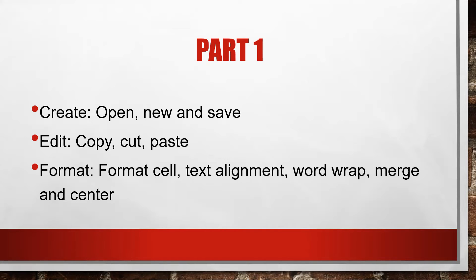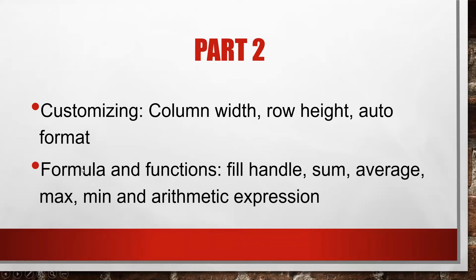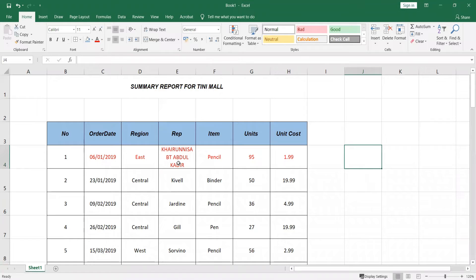Part one is done. I've taught you how to open a new workbook, how to copy, cut, and paste from another file, and how to format cells. Now, Part two: I will teach you customizing column width and row height, auto-format, and most importantly how to use formulas and functions for arithmetic — sum, average, max, and min. Let's go to our Excel workbook.